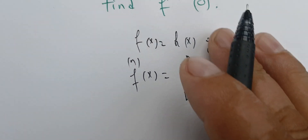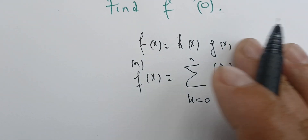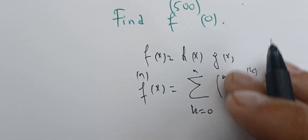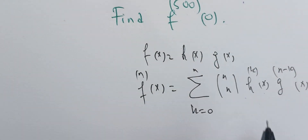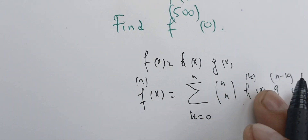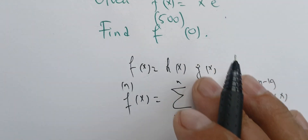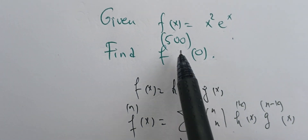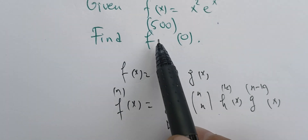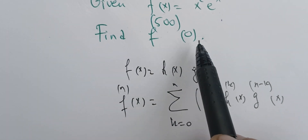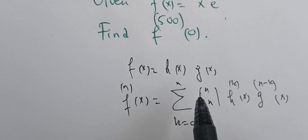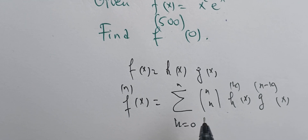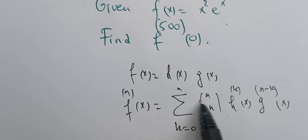This looks like the binomial theorem — in fact, we can prove this using induction and binomial coefficients. We are not going to prove it here; we're just going to use it to find the derivative of order 500 evaluated at zero.